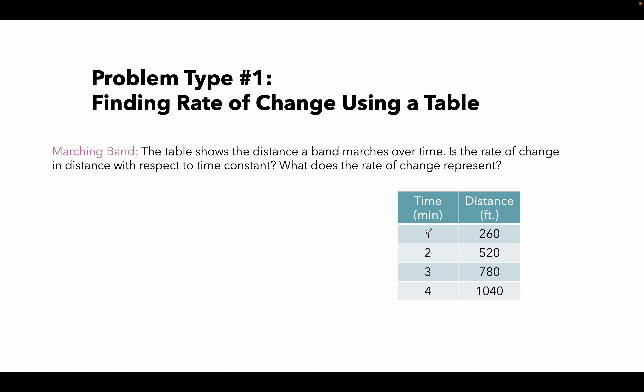First of all, my independent variable is time. When I put in 1, out comes 260 feet of distance that the marching band has traveled. After 2 minutes, 520 feet. After 3 minutes, they've gone 780 feet. After 4 minutes, they've gone 1040 feet.